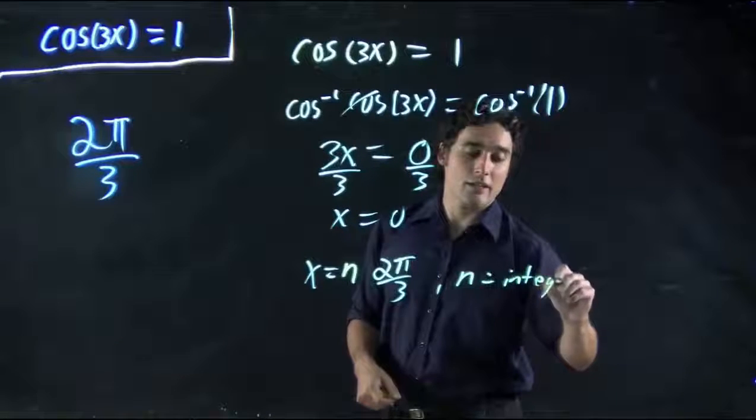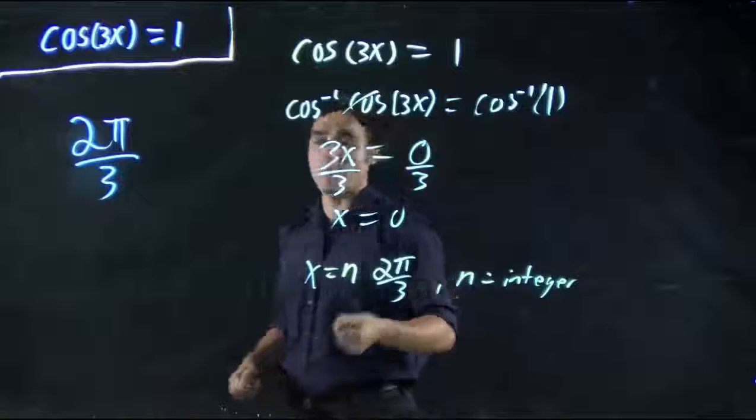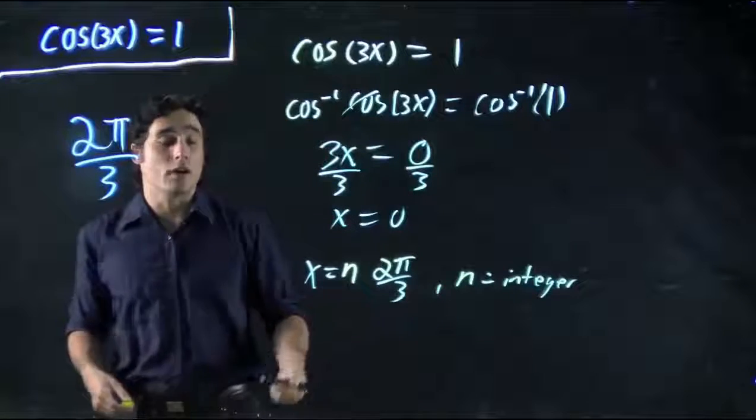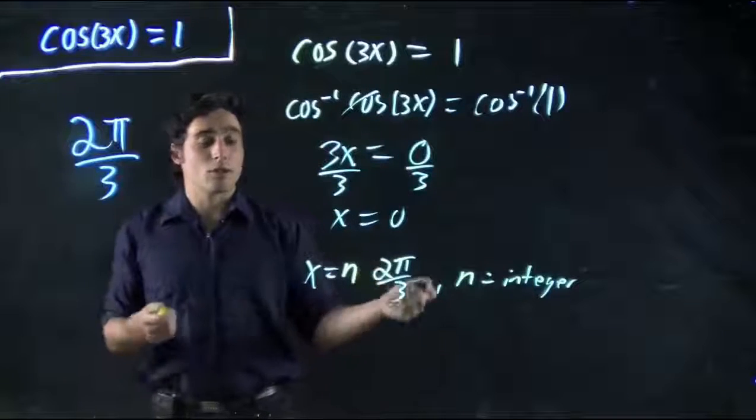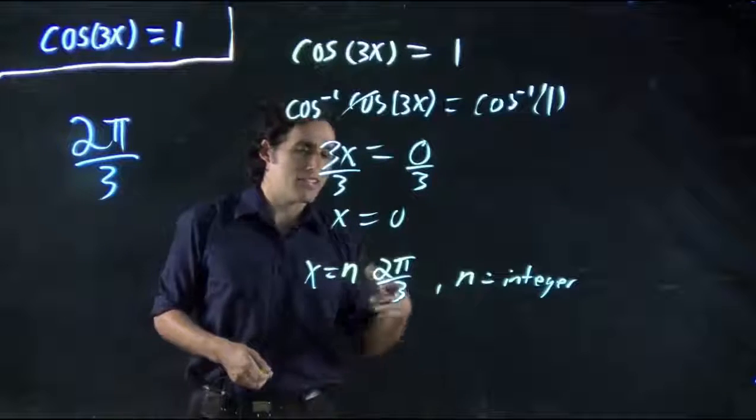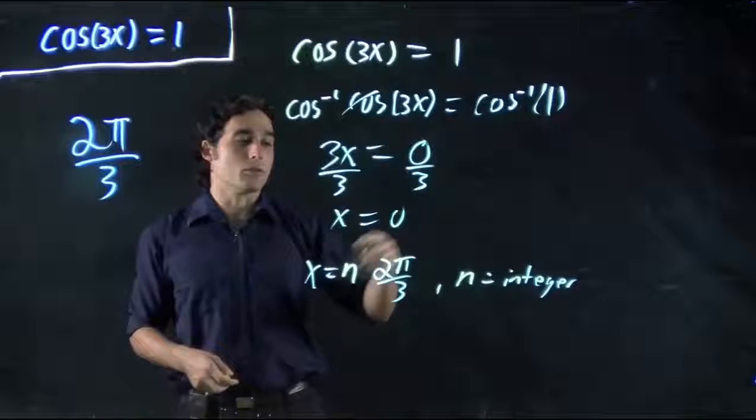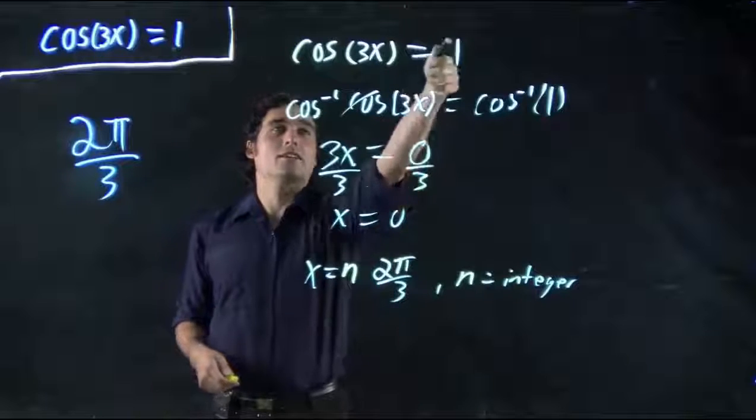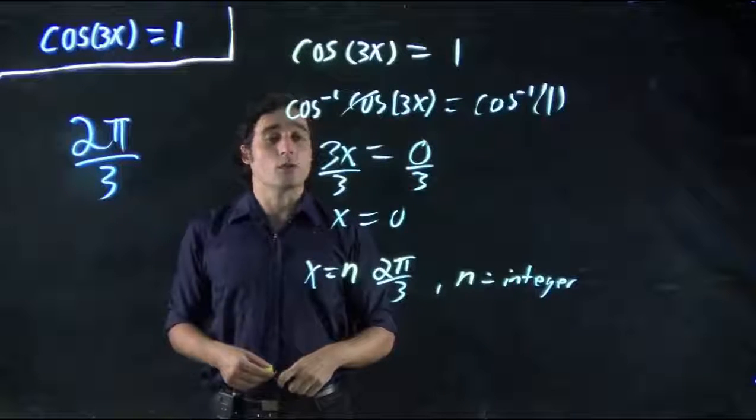And it's just every 2π upon 3, whatever that is. We can convert it to a number if we wanted. Pi is just 3.14, so we could convert this over and see it's just every bit over 2 it would be repeating itself, and we'd get this whole function equal to 1.